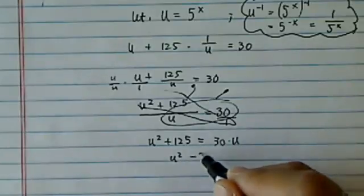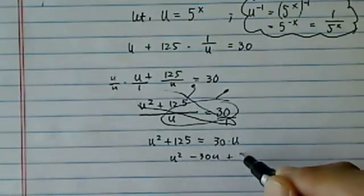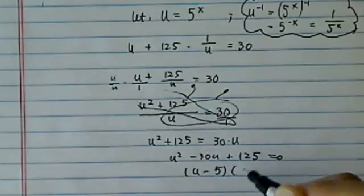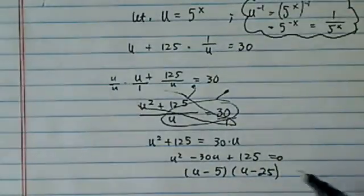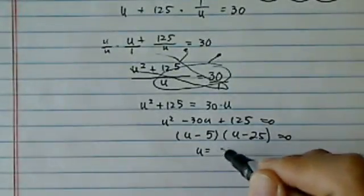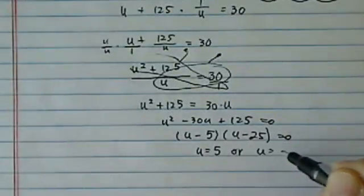Now here, you recognize right away hopefully that this is just a simple quadratic. We're going to factor u minus 5, u minus 25, to give us the answer. So we're almost there. u equal to 5, or u equal to 25.